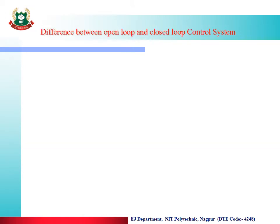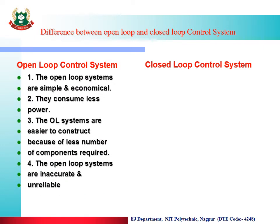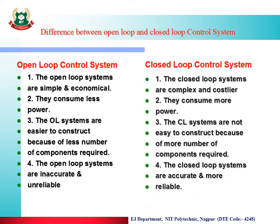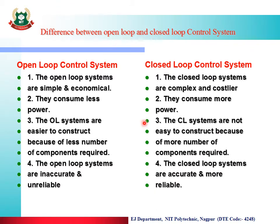Now we will see the difference between open loop and closed loop systems, which we already covered in the previous lecture. In open loop control system it is very simple and economical, but closed loop control systems are very complex and costlier. Open loop control system consumes less power and closed loop control system consumes more power.